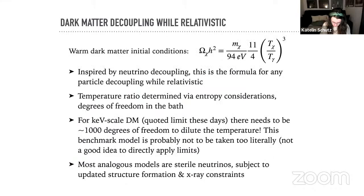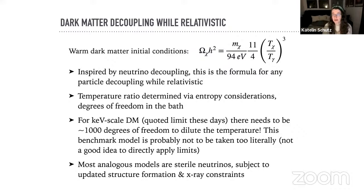One example of how modes can get messed up is if dark matter decouples while it's relativistic. If you take neutrinos seriously as a dark matter candidate — as people did in the seventies — we know they decouple from the standard model while relativistic. So we can predict the abundance of neutrinos depending on their temperature relative to the standard model. You can take that same story and ask: what if it's not neutrinos but some other thing? Put in the mass and temperature as free parameters, and the thermodynamics of decoupling while relativistic still tells you how much of this stuff there has to be.